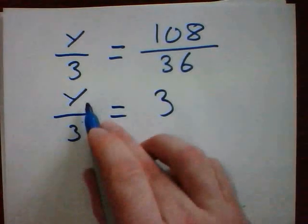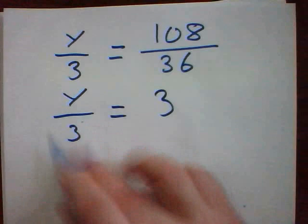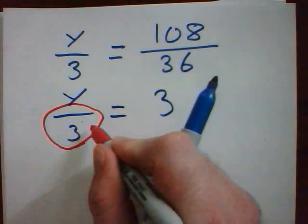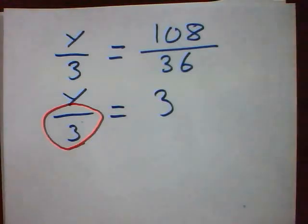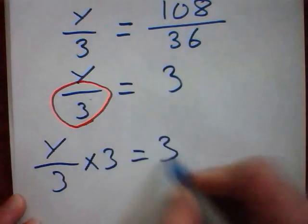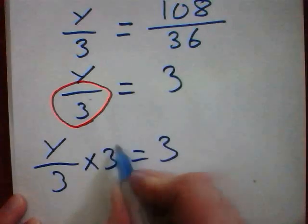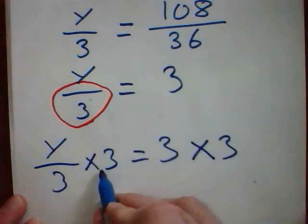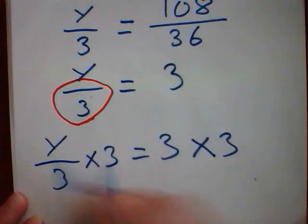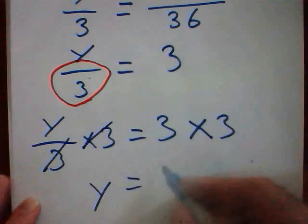Once again, my goal is to get y by itself. I'm going to get rid of this. I would make the choice using BEDMAS backwards, but there's only one thing to get rid of. To get rid of dividing by 3, I will do the opposite. I will times by 3. Whatever you do to one side, you must do to the other. I times this side by 3. I have to times that side by 3. If I divide something by 3 and then times it by 3, I'm just going to end up with the original number. These will cancel each other out. 3 times 3 equals 9.